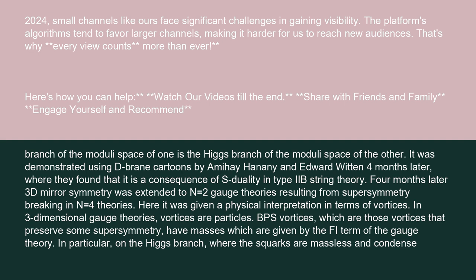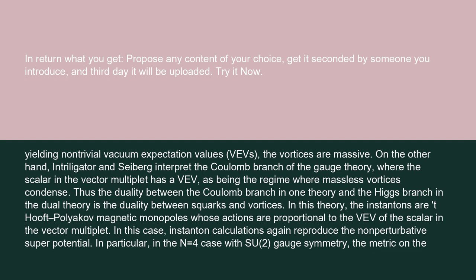In three-dimensional gauge theories, vortices are particles. BPS vortices, which are those vortices that preserve some supersymmetry, have masses which are given by the FI term of the gauge theory. In particular, on the Higgs branch, where the squarks are massless and condensed, yielding non-trivial vacuum expectation values (VEVs), the vortices are massive.